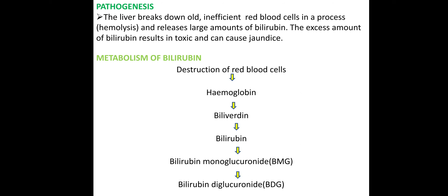Now let's look at pathogenesis. The RBC lifespan is 120 days. After 120 days, the RBC undergoes breakdown. One of the byproducts is bilirubin. The excess bilirubin is toxic and causes jaundice.